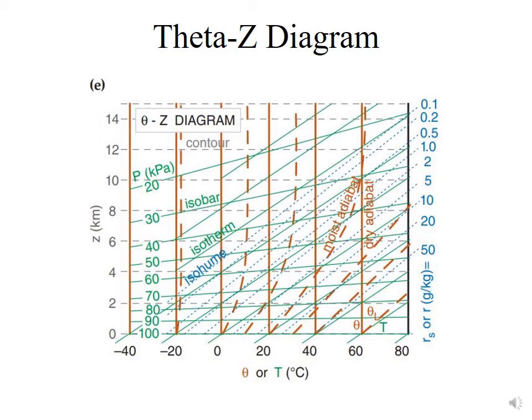The Theta-z diagram is a special research diagram that's often used extensively in boundary layer meteorology.